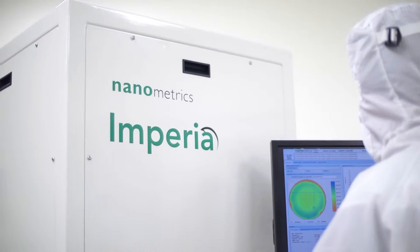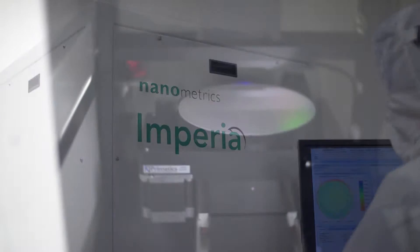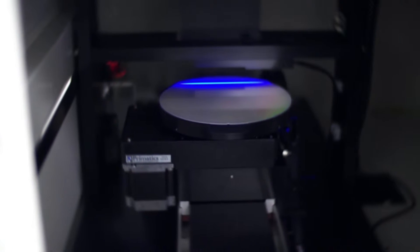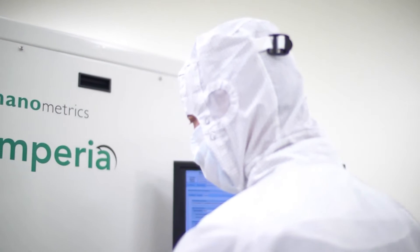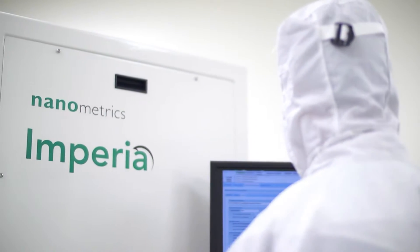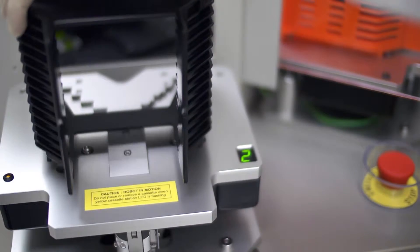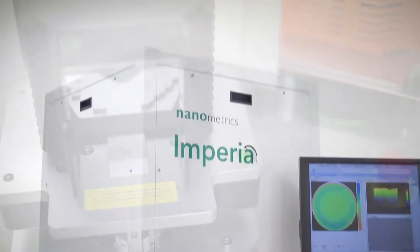Introducing the Imperia Photoluminescence Imaging System from Nanometrics. With its unique optical design technology, Imperia detects and classifies yield-killing defects with the additional benefit of simultaneous state-of-the-art photoluminescence production monitoring.